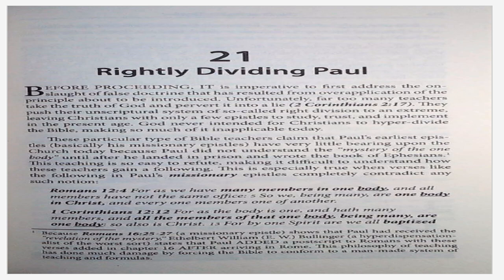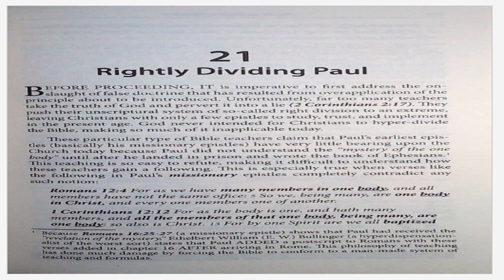These particular type of Bible teachers claim that Paul's earliest epistles — basically his missionary epistles — have very little bearing upon the church today because Paul did not understand the mystery of the one body until after he landed in prison and wrote the book of Ephesians. Because Romans 16:25-27, a missionary epistle, shows that Paul had received the revelation of the mystery, E.W. Bullinger, a hyper-dispensationalist of the worst sorts, states that Paul added a postscript to Romans with these verses added in chapter 16 after arriving in Rome. This philosophy of teaching has done much damage by forcing the Bible to conform to a man-made system. This teaching is easy to refute, making it difficult to understand how these teachers gain a following.